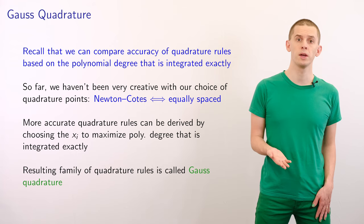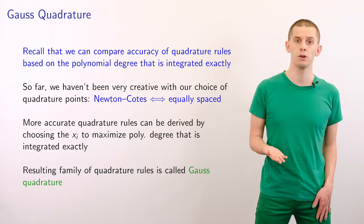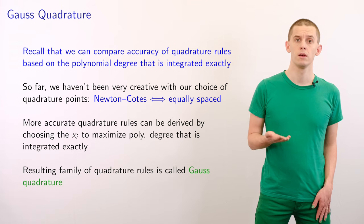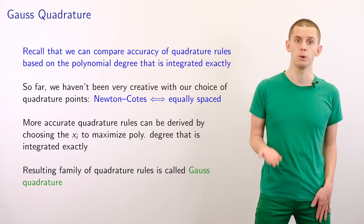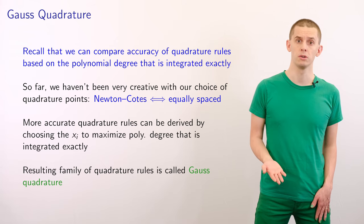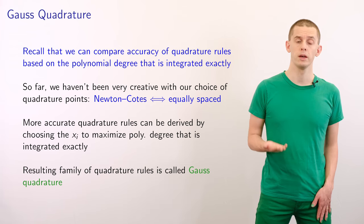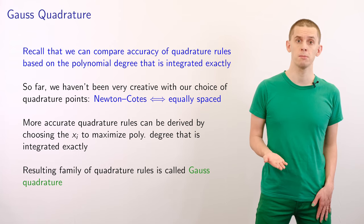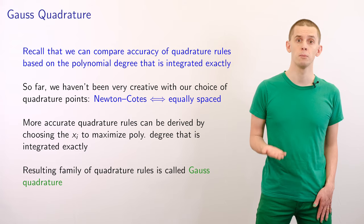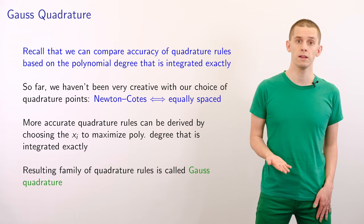In previous videos, we showed that we could compare the accuracy of different quadrature schemes by looking at the degree of polynomial that they could integrate exactly. So far, we haven't been very creative in our choice of quadrature points. We've been looking at Newton-Cotes quadrature, where we've just been choosing our quadrature points to be equally spaced over our integration interval. In this video, we're going to show that we can do better than this, and we're going to maximise the degree of polynomial that we can integrate by specially choosing our quadrature points, the xi. And this will lead to a family of quadrature rules referred to as Gauss quadrature.